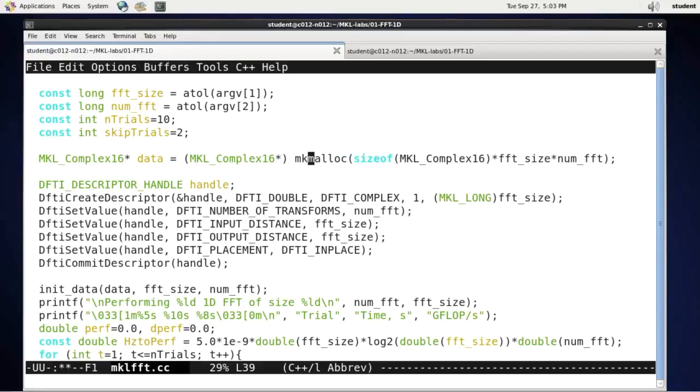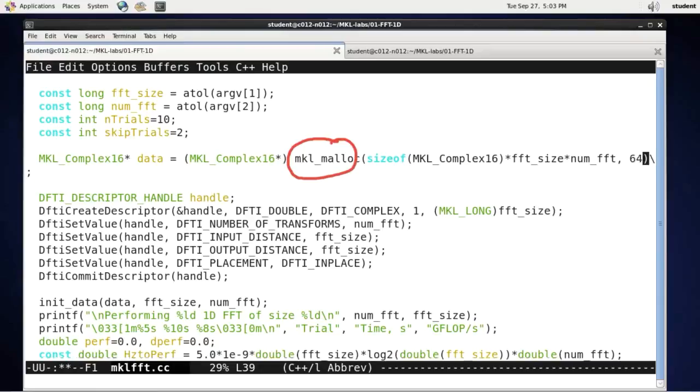Instead of malloc, I will call mkl_malloc. This is one change. And the other change is that now that I am using this other allocator, I have to specify one more argument, and this argument is alignment.